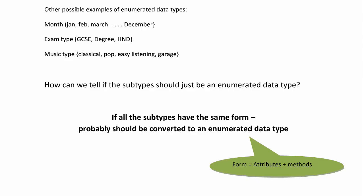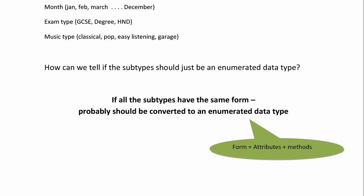Let's look at some more examples of enumerated data types. Basically, anything where you think in terms of interface, you've got a drop-down list box, you've got an enumerated data type. So how can we tell if the subtype should just be an enumerated data type? Well, if all the subtypes have the same form, we should convert them and add an enumerated data type in the superclass.